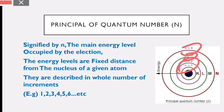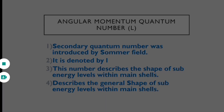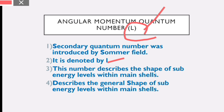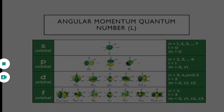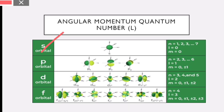The second type is the angular momentum quantum number, denoted by L. This is also called the Sommerfeld secondary quantum number. It describes the subshell — S, P, D. For the S orbital, N is equal to 1 and L is equal to 0. The magnetic angular momentum quantum number M is equal to 0, and M is equal to 0 plus or minus 1.